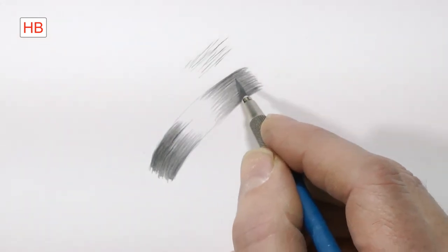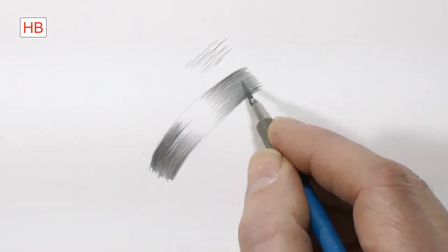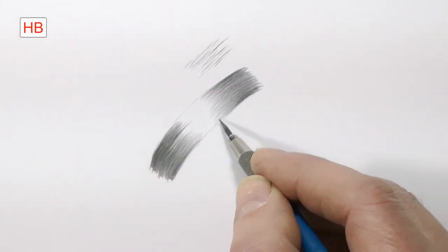Finally, begin to reach a point where the HB is beginning to look grainy. And we're heading towards the highlight. So we'll change to a 2H.